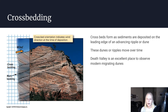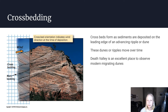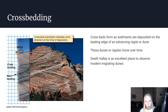Another very common sedimentary structure — what we call a primary structure, a structure that formed as the rock was forming — is cross bedding. Cross beds form as sediment is being transported and deposited on the leading edge of a dune or a ripple.